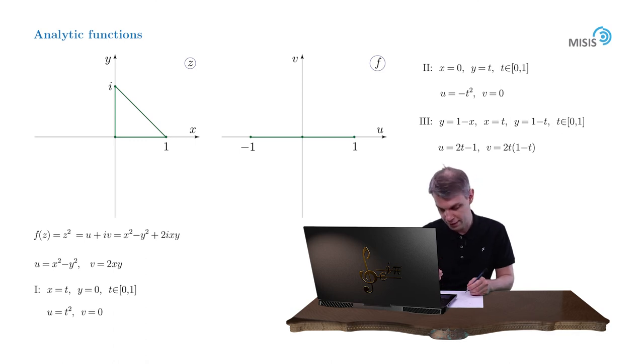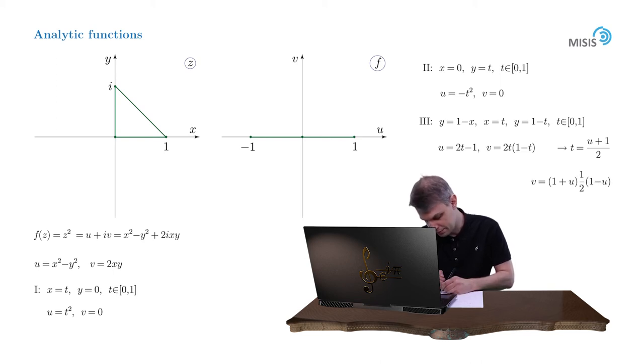And to obtain a curve in uv-plane we simply express t as a function of u from our first equation. t equals u plus 1 over 2. And v now equals 1 plus u times 1 half of 1 minus u. And we obtain a parabolic curve of 1 half minus 1 half u squared. So let us draw it.